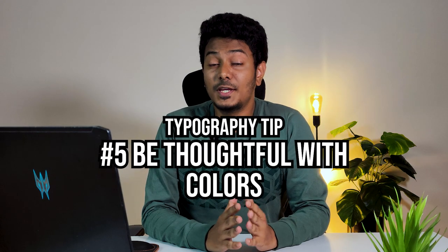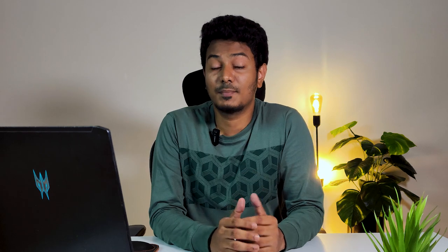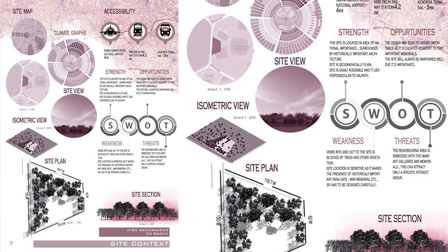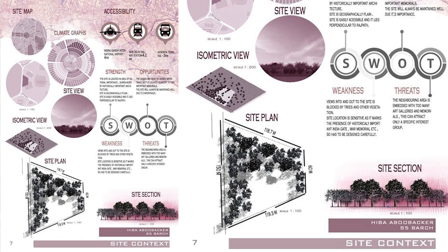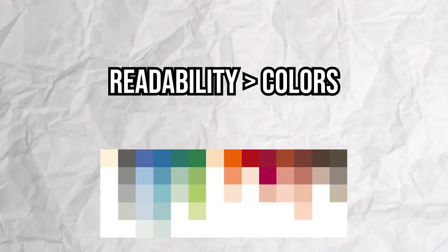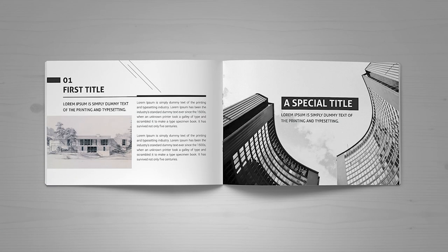Tip number five: be thoughtful with colors. Using colors in text can be tricky because it could literally make or break your presentation. If you choose to use colors in your sheet, try to pick a prominent color from your drawing so that it doesn't look odd. Prioritize readability over the choice of colors — using black in most cases would be a safer option.